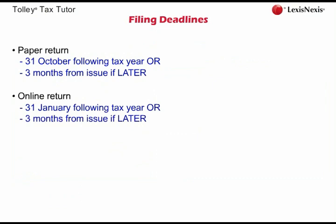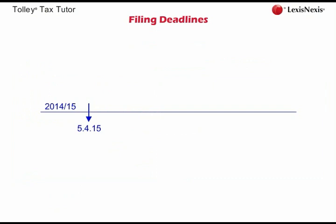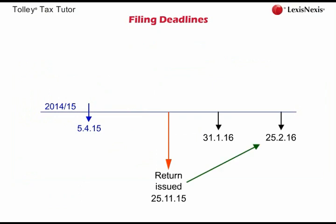We will now consider the filing deadlines where a tax return is issued late — this might happen when a taxpayer has started in business and tells HMRC he is chargeable just before the 5th of October deadline. Assume the 2014-15 tax return is issued on the 25th of November 2015. The deadline for filing is the later of the 31st of January or three months from the issue of the return. In this instance, the later date is three months from issue, giving a final filing date of the 25th of February 2016. If the return is filed by this date, HMRC cannot charge any late return penalties.